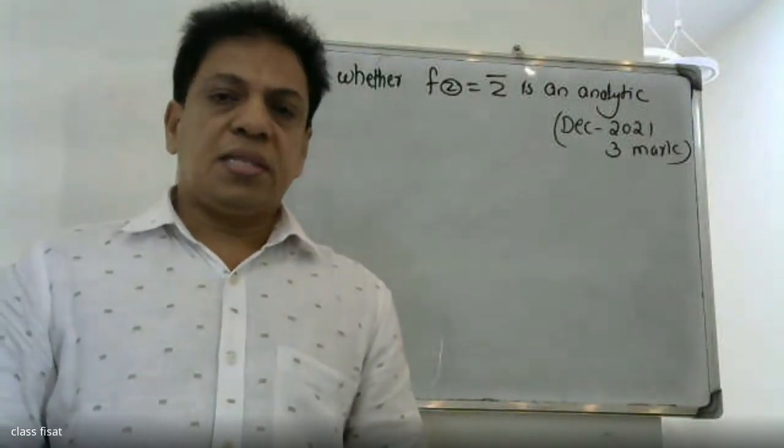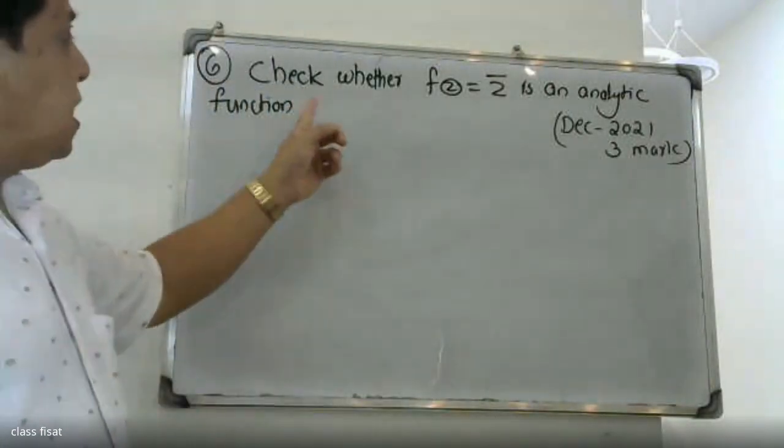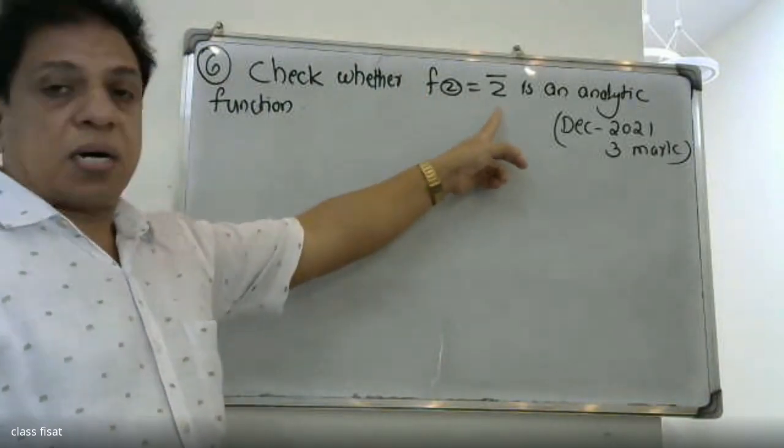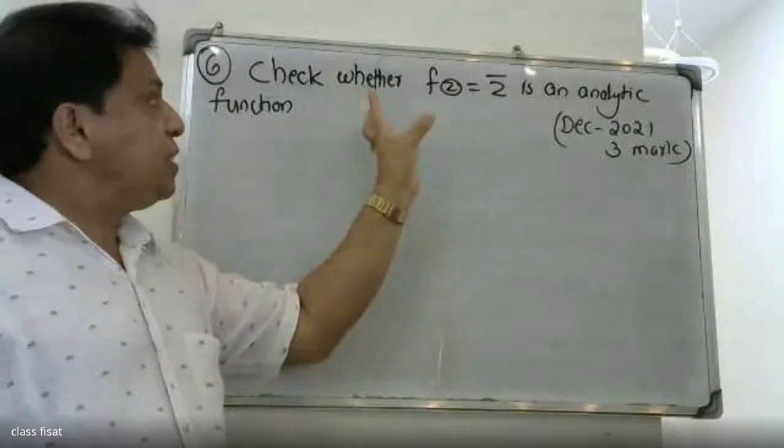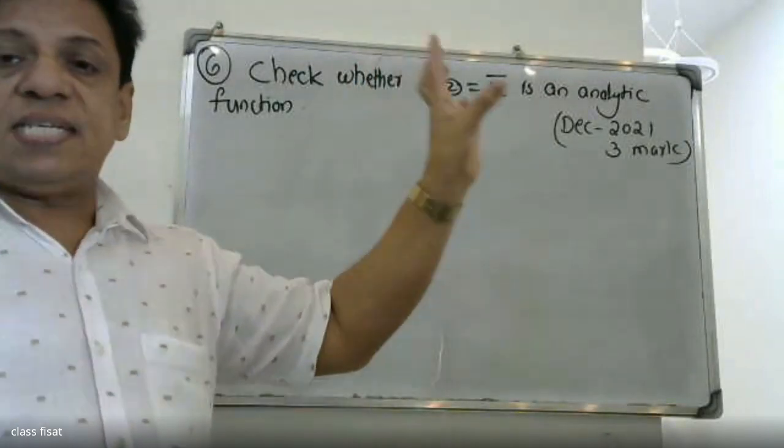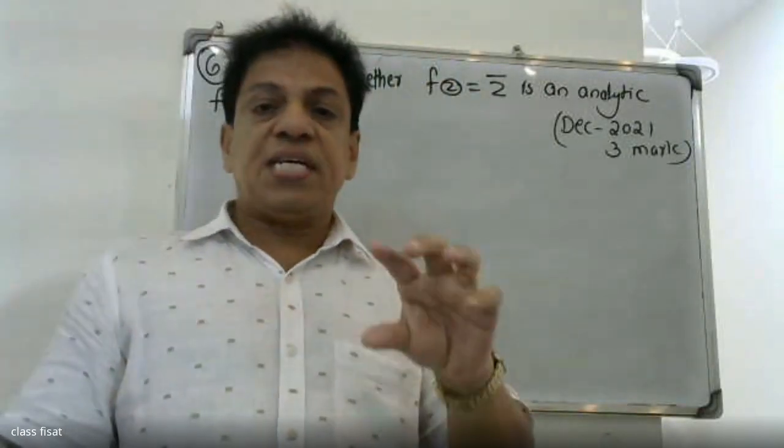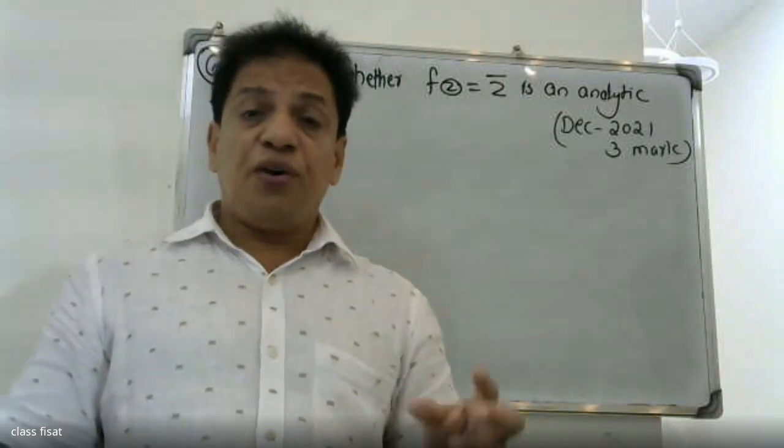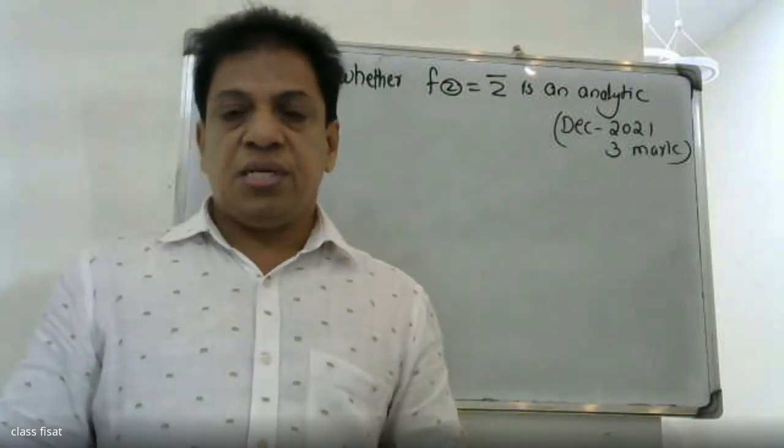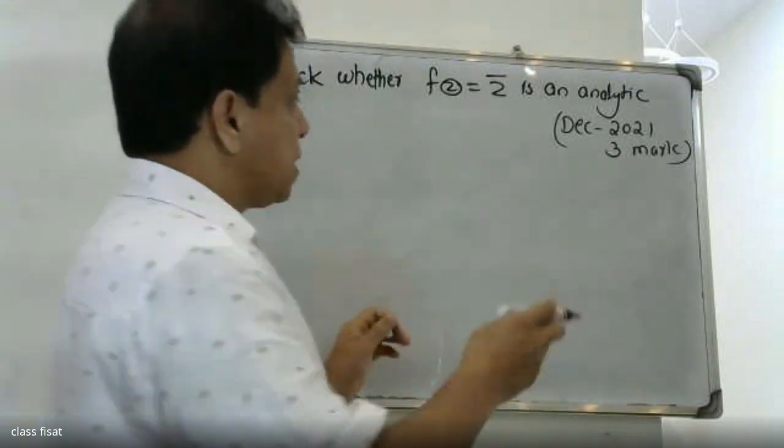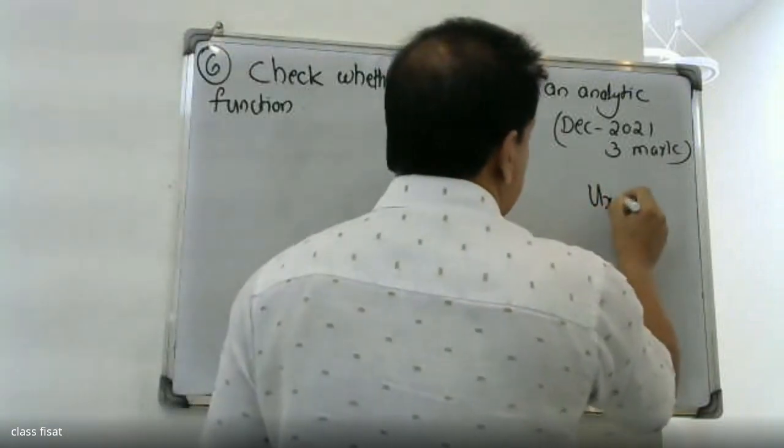Good morning students. Today's question: check whether a function f of z is analytic. For a function to be analytic, the function must satisfy Cauchy-Riemann equations. The Cauchy-Riemann equations state that ux is equal to vy.